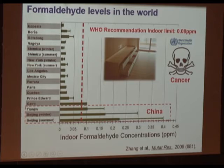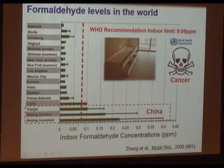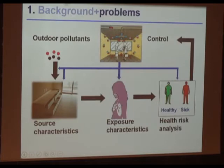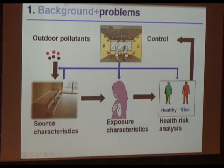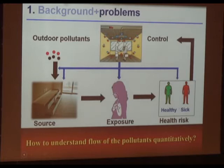This is a source of formaldehyde and other VOCs. Compared to other cities in the world, Beijing and Tianjin — two major Chinese cities — have formaldehyde concentration levels much higher than the WHO recommended threshold. There are many sources: outdoor sources for PM, and indoor sources — VOCs, SVOCs, VVOCs, and so on. We want to know source characteristics, exposure characteristics, and health risks, so that we can control indoor organic compound pollutant exposure.